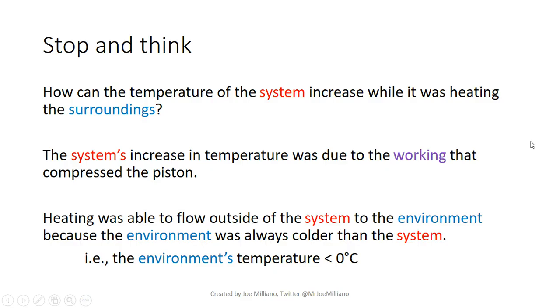Now you may think, wait a minute, how can the temperature of the system increase when it is heating the surroundings? Because it seems like if the system is heating its surroundings, then the temperature should be decreasing, right? Because it's giving off heat to the surroundings. But you have to remember that we have work and we have heating. So those two things cause the internal energy to change in your system. They cause the change in temperature. So if your system increases in temperature, it can still be heating the surroundings, as long as there's work being done on the system.